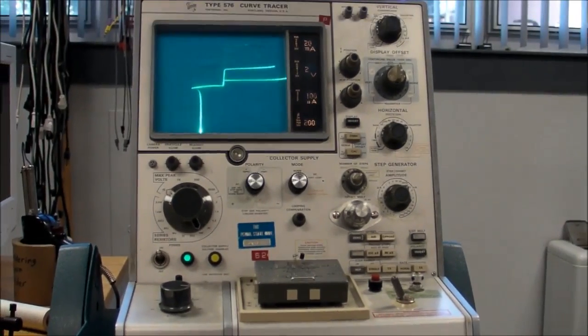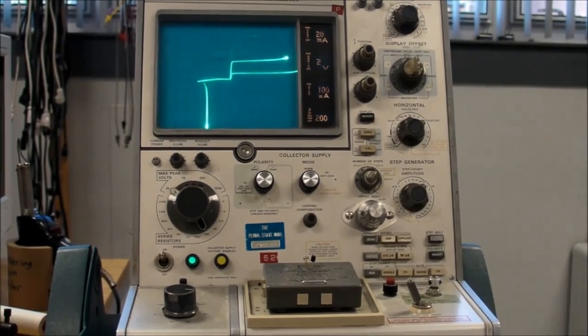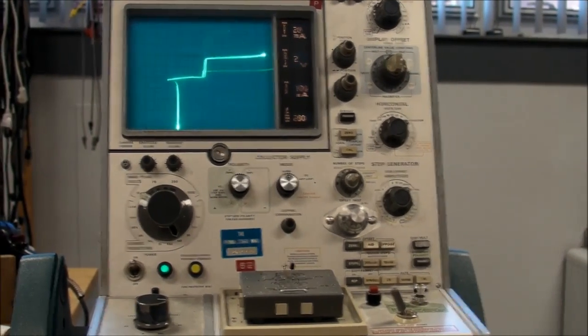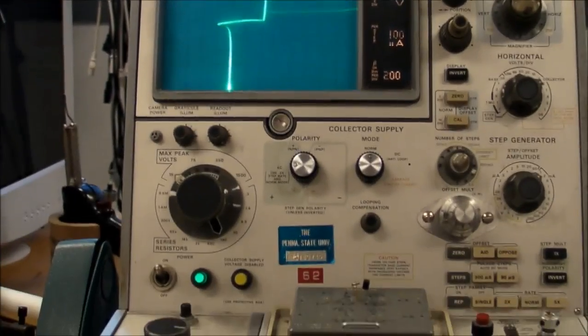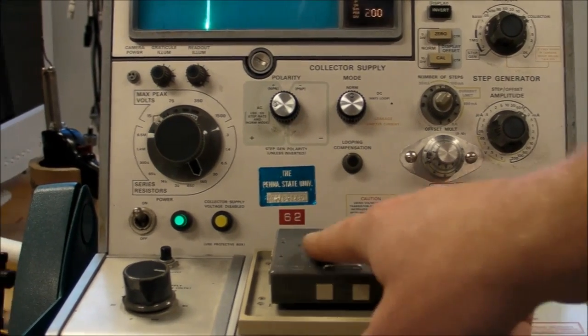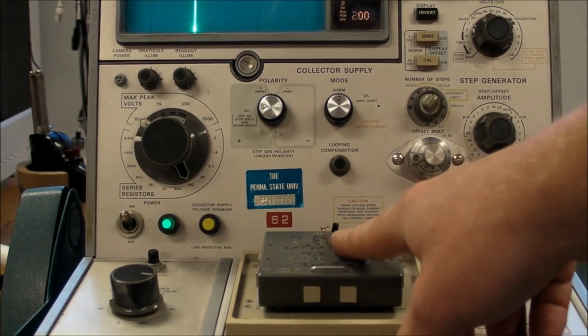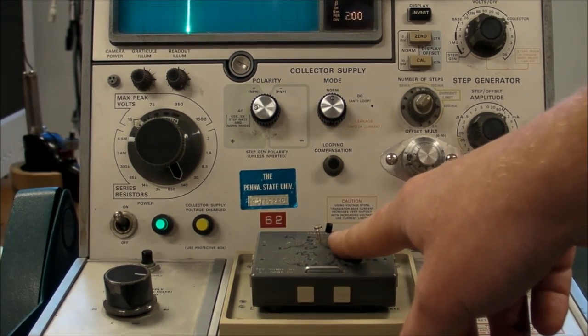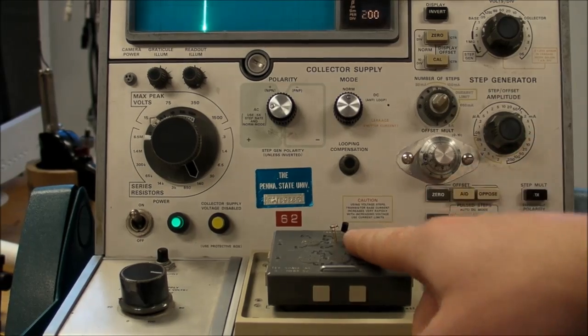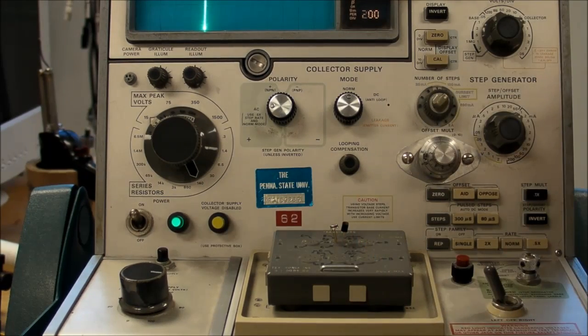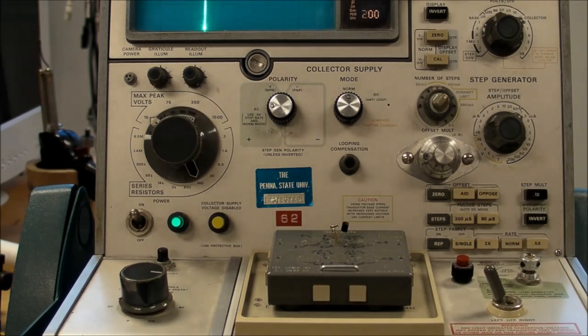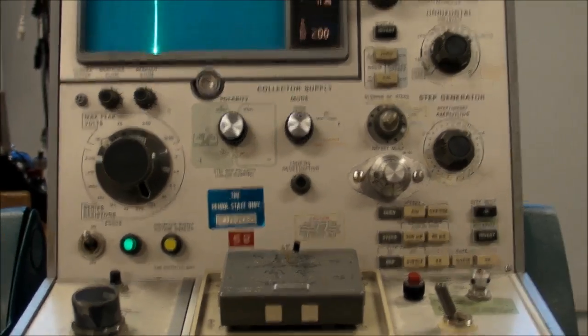So I actually have two transistors on the curve tracer: one is the SWB 2433, and then I'm just ordinary 2N3904, a very common small signal transistor.